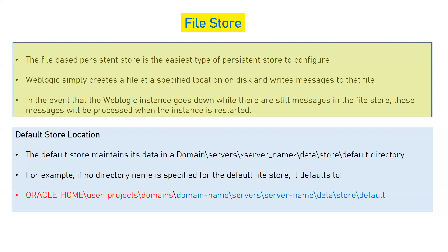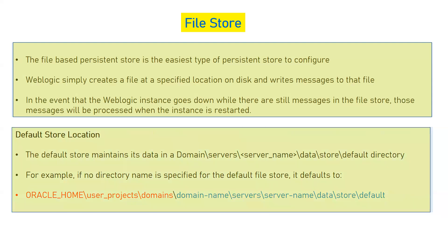The default location for JMS file storage is a directory named 'data/store/default' inside your server folder within your domain. Inside the domain, you'll see a 'servers' folder containing the root folders for all managed servers and the admin server. Click on the server name and inside you'll see a 'data' folder, then 'store', then 'default'. This is the default directory for JMS services if you are not configuring a persistent store explicitly. You can customize this by specifying a separate directory during configuration.